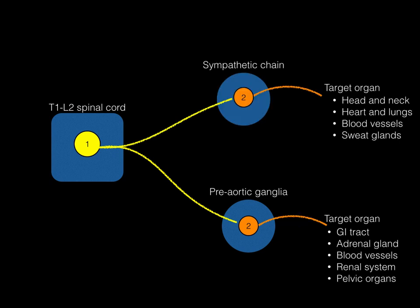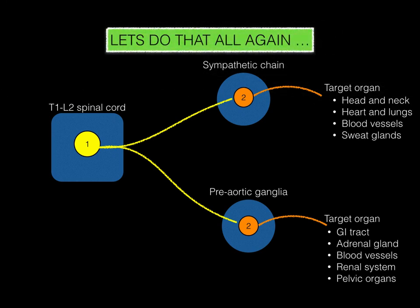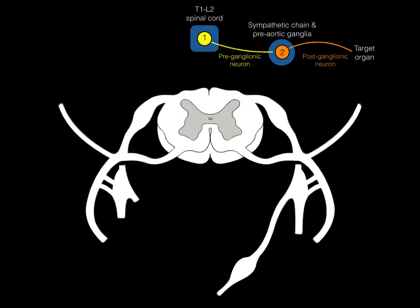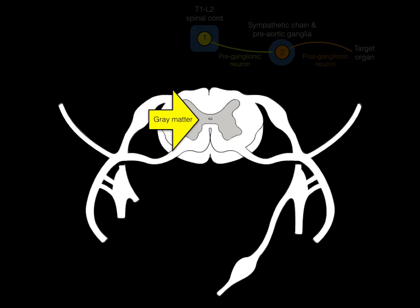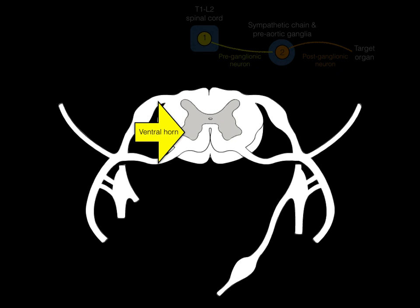Now let's go through this again using a cross-section through the spinal cord at the T1 to L2 levels. The gray matter has a dorsal horn for sensory input, a ventral horn for motor output, and the lateral horn where the T1 to L2 sympathetic neurons arise. Then we have white matter along the periphery of the spinal cord.